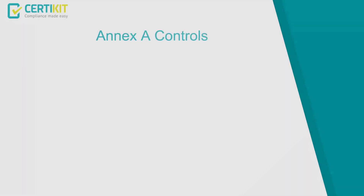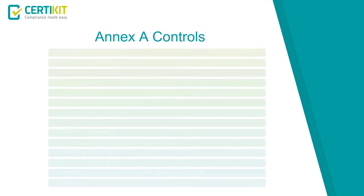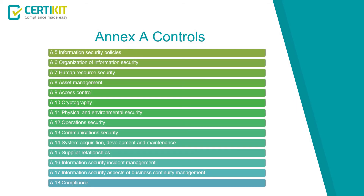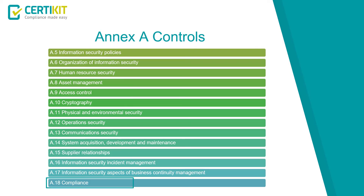The implementation of the Annex A controls is a somewhat more technical exercise, although some of the controls involved are administrative or procedural in nature, and you'll need to define who the best people are to look at each of the control areas, such as human resources, access control, suppliers, and compliance. Splitting up the controls and allocating them across appropriate teams is key to making progress in getting the Annex A controls in place.